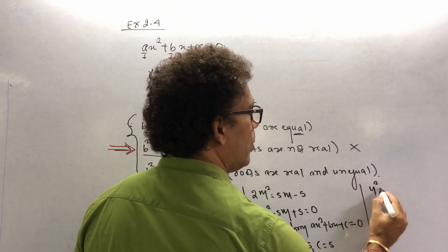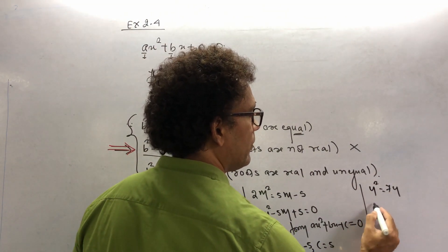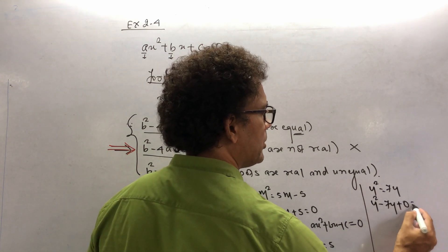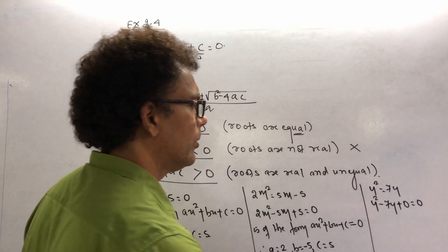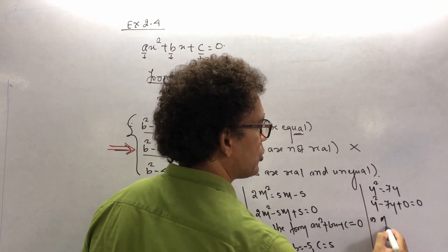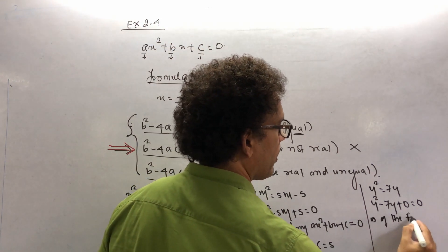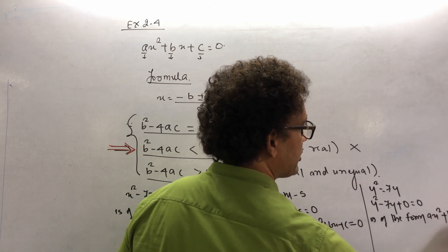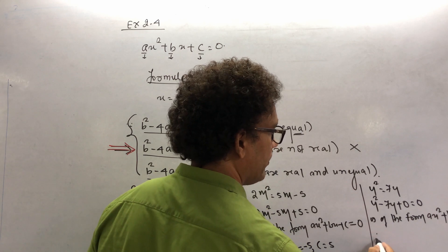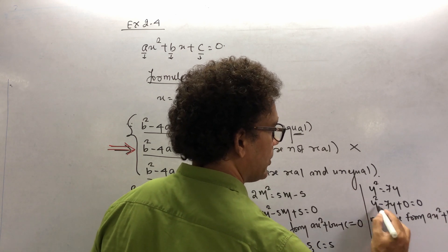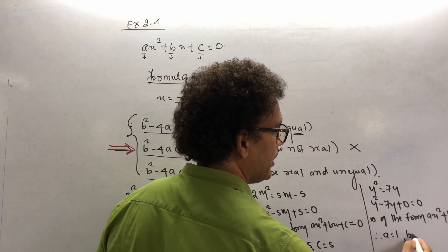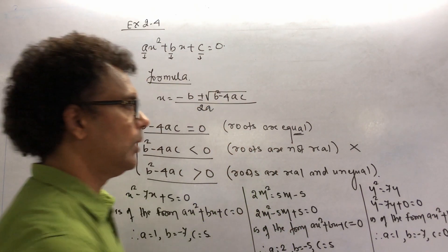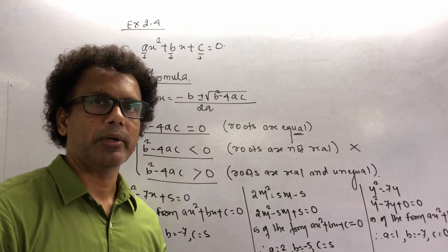The last one is y² = 7y. Rearranging: y² − 7y + 0 = 0. Comparing with ax² + bx + c = 0, you get a = 1, b = −7, and c = 0. This is how you identify the coefficients.